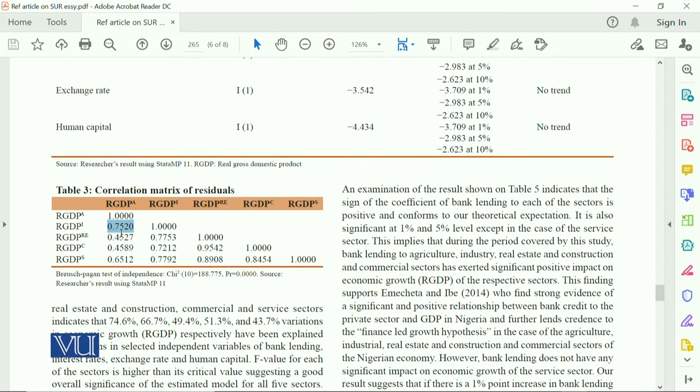The second one is 0.45, the third one which is commerce is 0.45, and in services it is 0.65. This means that every variable is strongly correlated with each other.